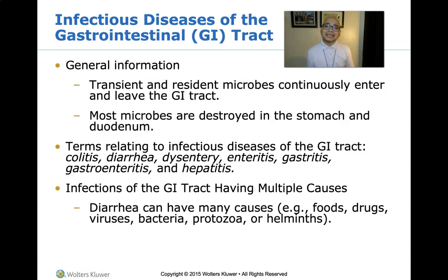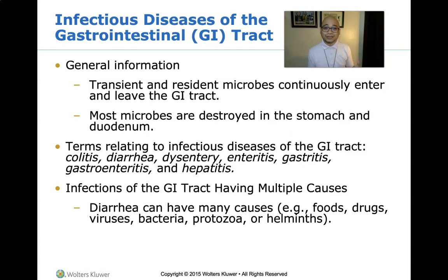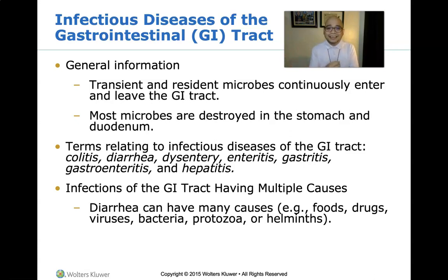If microbes are destroyed in the stomach, how can they still cause infection? The most common route is through ingestion by means of a vehicle. In the context of GI tract infection, a vehicle pertains to food and water. Microorganisms may survive when ingested with contaminated food or water, and can thereby cause infection. Let us discuss the relevant terms one by one.